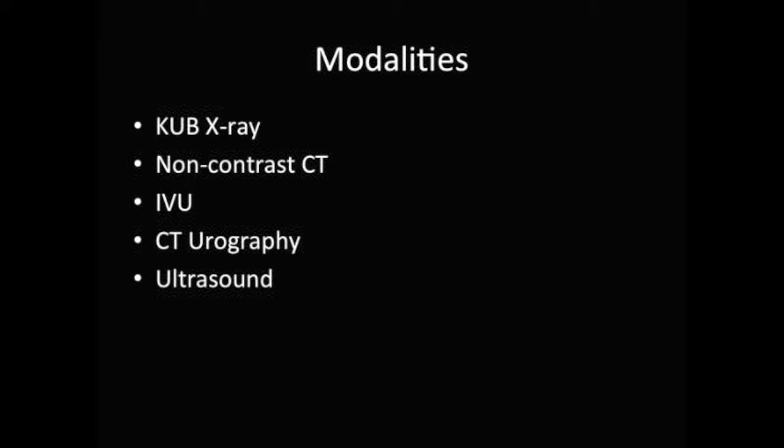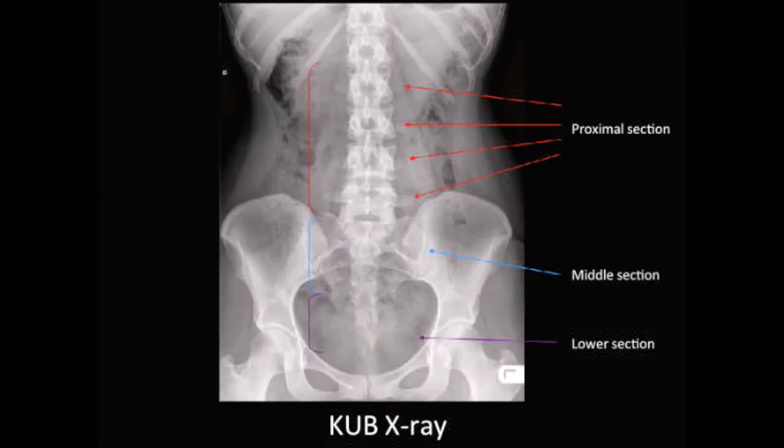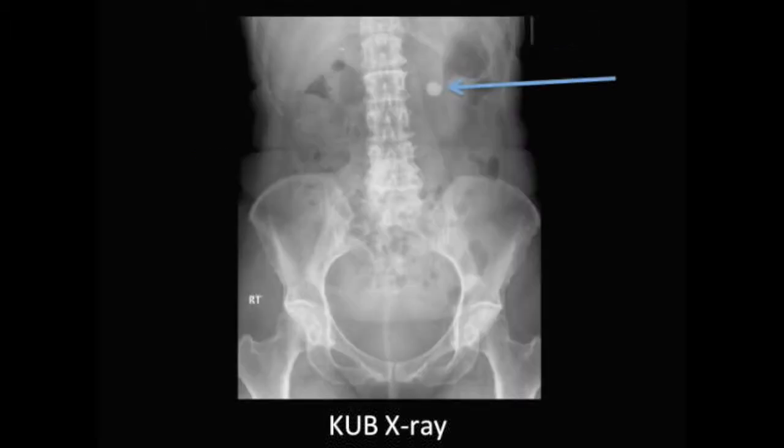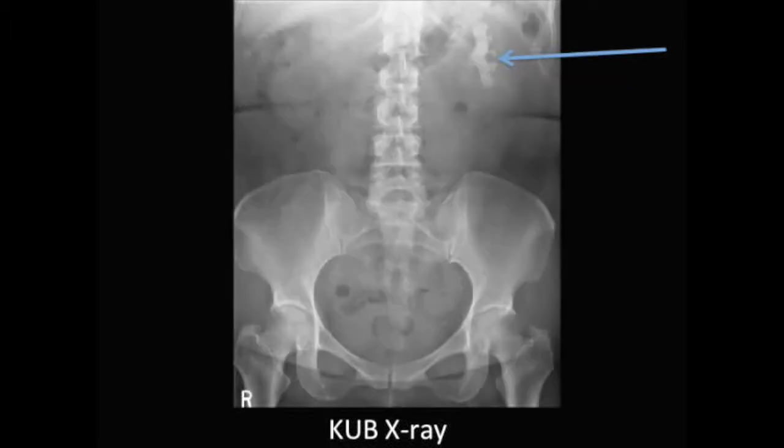I'm going to go through some of the common modalities used. I'm going to start with KUB x-ray. This is an x-ray showing the kidneys, ureters, and bladder. It can be very difficult to visualize the normal routes of the ureters on KUB x-rays. The proximal section runs on the medial surface of the psoas muscle. The middle section passes just anterior to the sacroiliac joint, and the lower section moves more medially to join the bladder. It can be quite obvious to see stones on a KUB x-ray, as you can see in this image. However, not all stones can be visualized, as some are radiotranslucent. The next image shows quite a dramatic staghorn calculi. This occurs when a large renal calculi forms in the calyces and pelvis of the kidney.